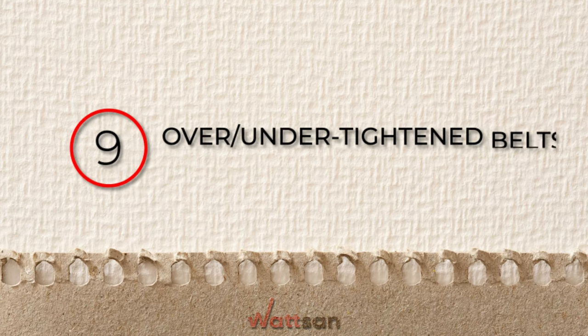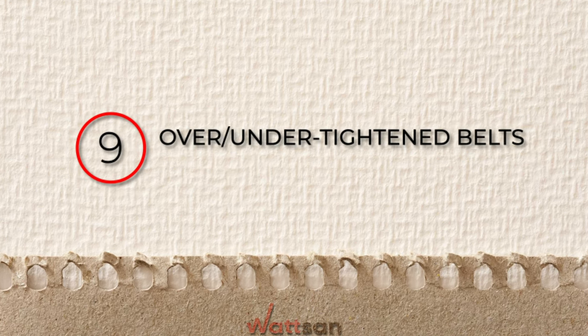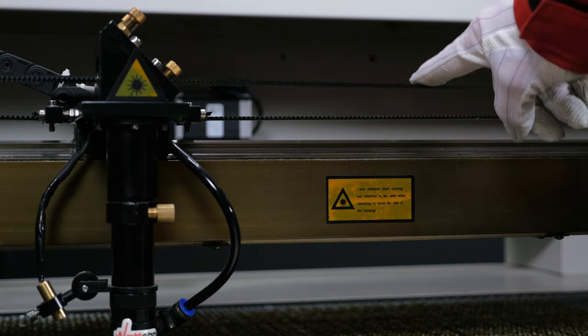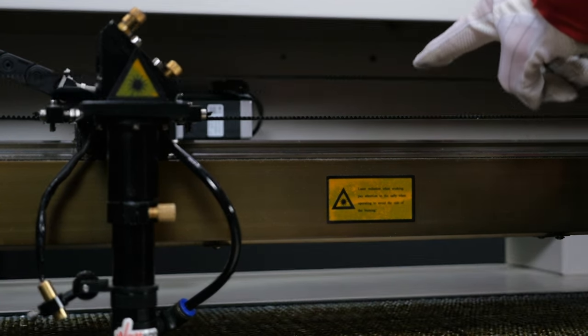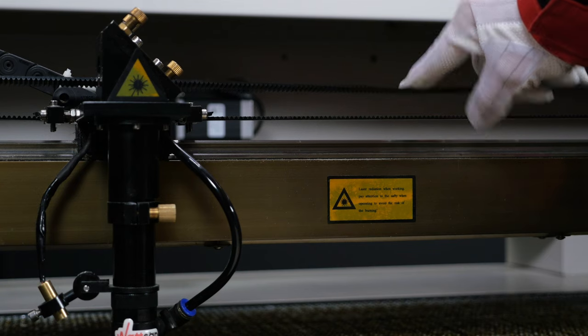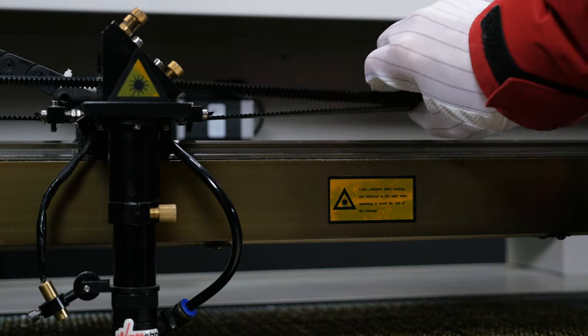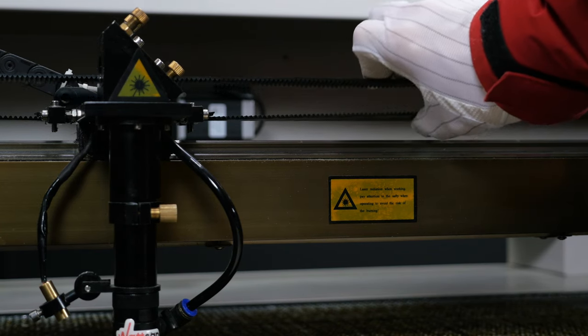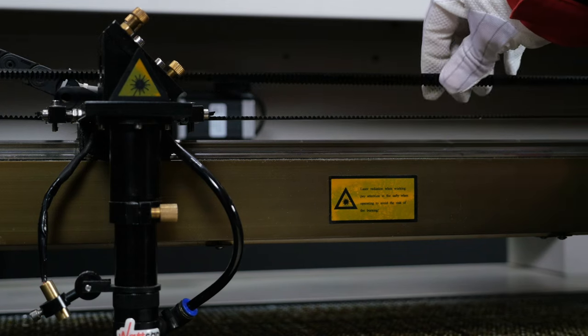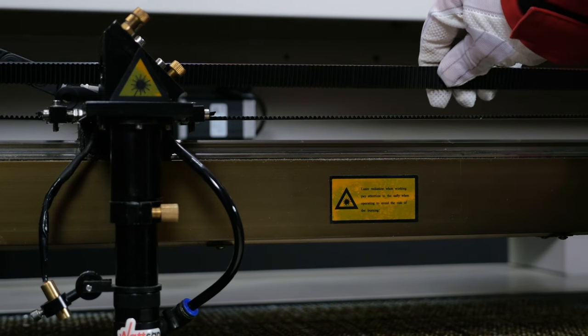9. Over-under tightened belts. It's always better to under-tighten the belts than over-tighten them. If the belts are too tight, there is a risk of increased wear, jerky cuts in corners, creaking, and in particularly difficult cases, skipping steps.